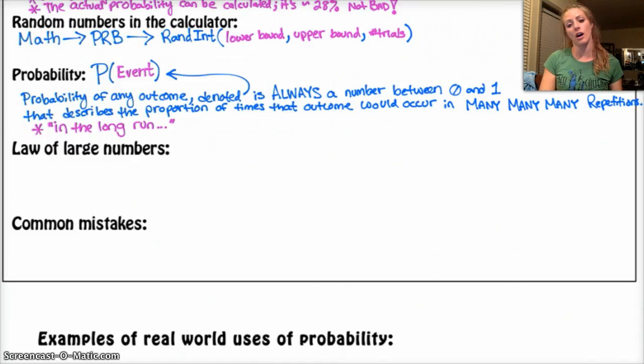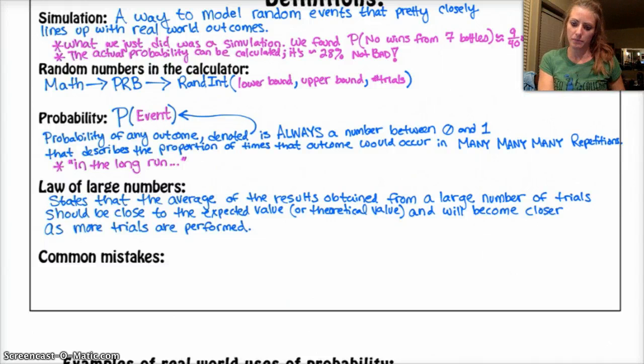That also leads into the law of large numbers. Basically what the law of large numbers says is that if I do a simulation many times, the more times I do it, the closer to the true probability, the true theoretical probability, my simulation is going to get. In the bottle example, I only ran it 40 times. If I had ran it 400 times instead, that number would have been closer to the theoretical probability, which was about 28%.